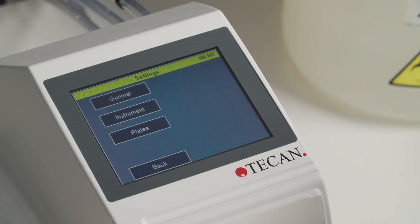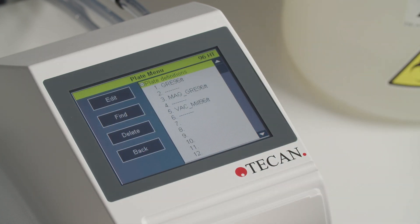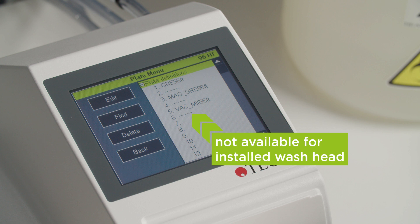Enter the settings and open the plate menu to see all the plate definitions stored on the instrument for the wash head mounted. This line indicates that the microplate is not compatible with the installed wash head.